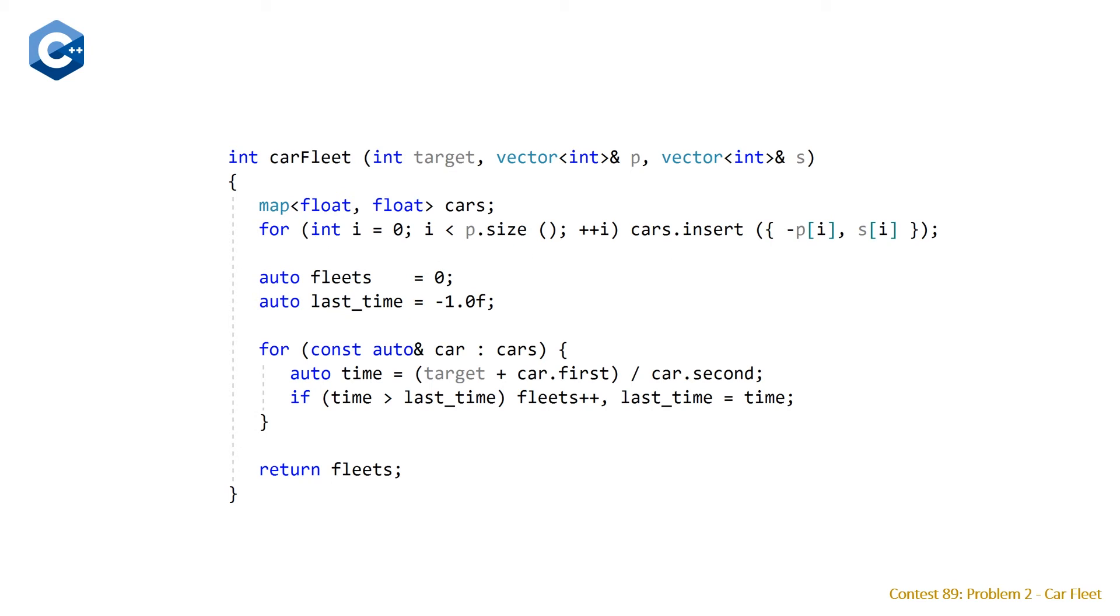So once we've finished this second line, we have our map of cars, which is now sorted from closest to the target. And then the value of this pair in the map is going to be the speed. So we initialize a variable fleets to zero and we initialize a variable last time to be negative one. And then we are going to use a range base for loop to loop through our cars. And for each car, we're going to calculate time, which as mentioned in the visual explanation is just target minus the initial position. But like I said, because our initial position is negated, we're using a plus here divided by the speed. So this gives us the time that our car arrives. And if the time is greater than the last time, we're going to do a post increment on fleets. And then we are going to reset our last time to be equal to the current time. And once we finish this range base for loop, we can just return fleets. So that's our whole solution.